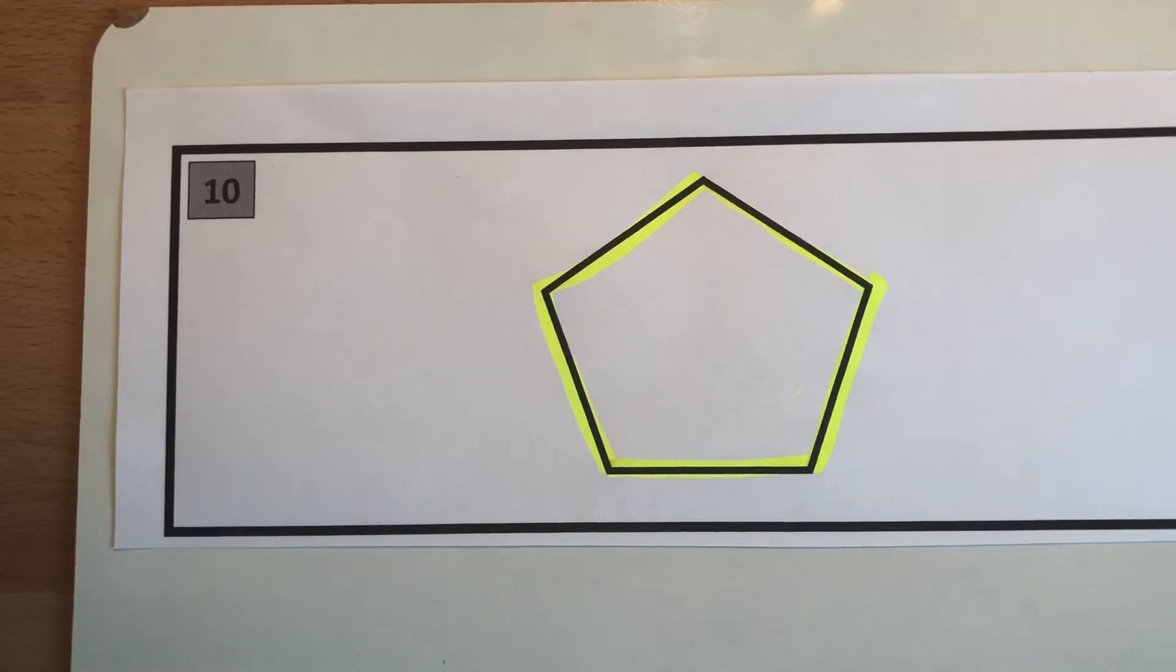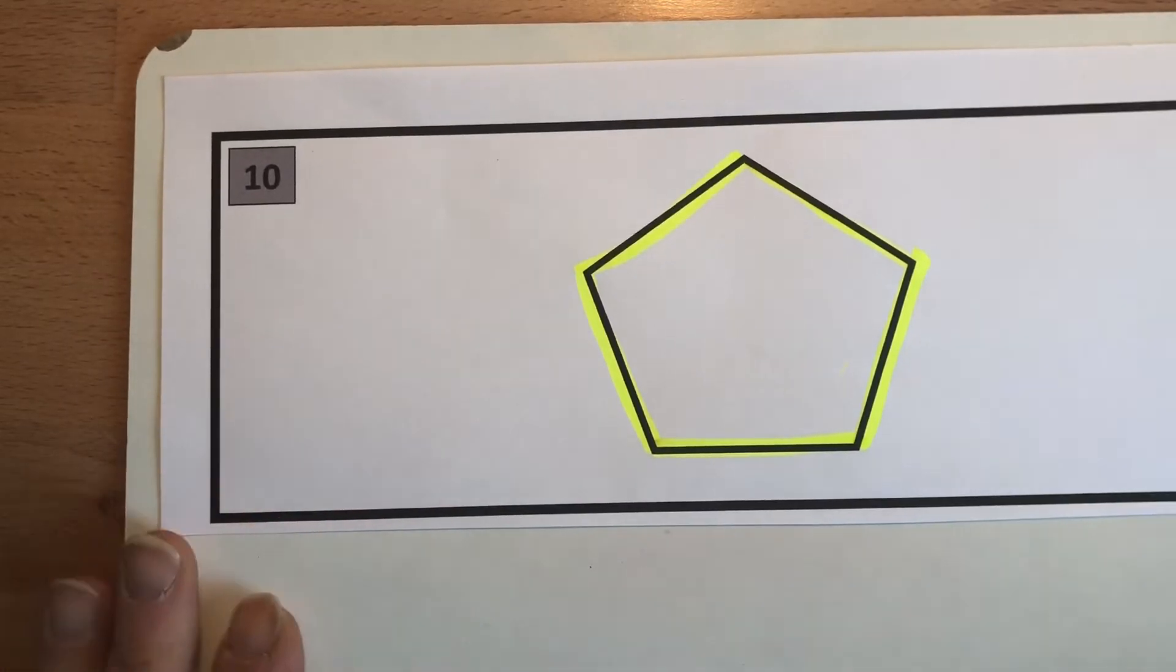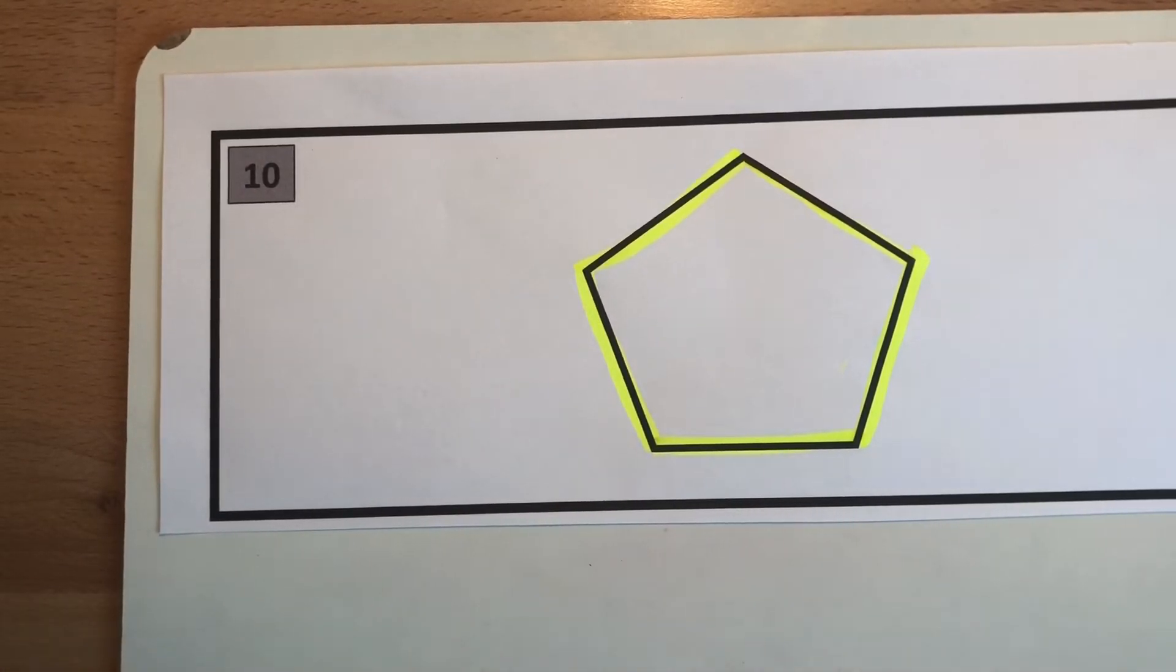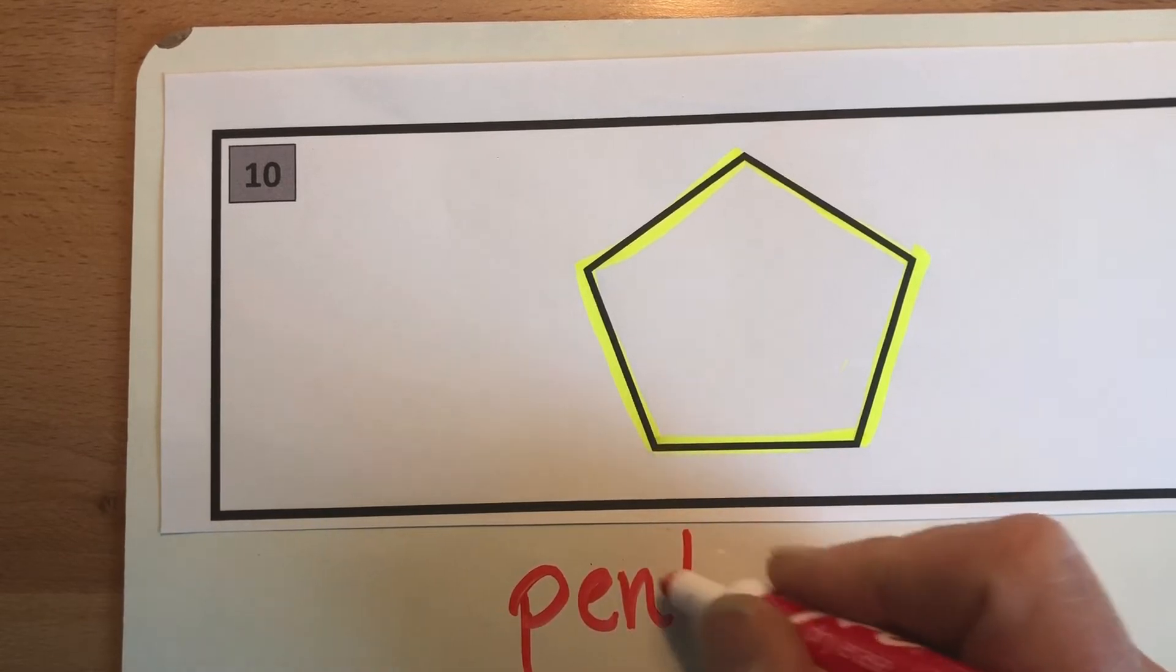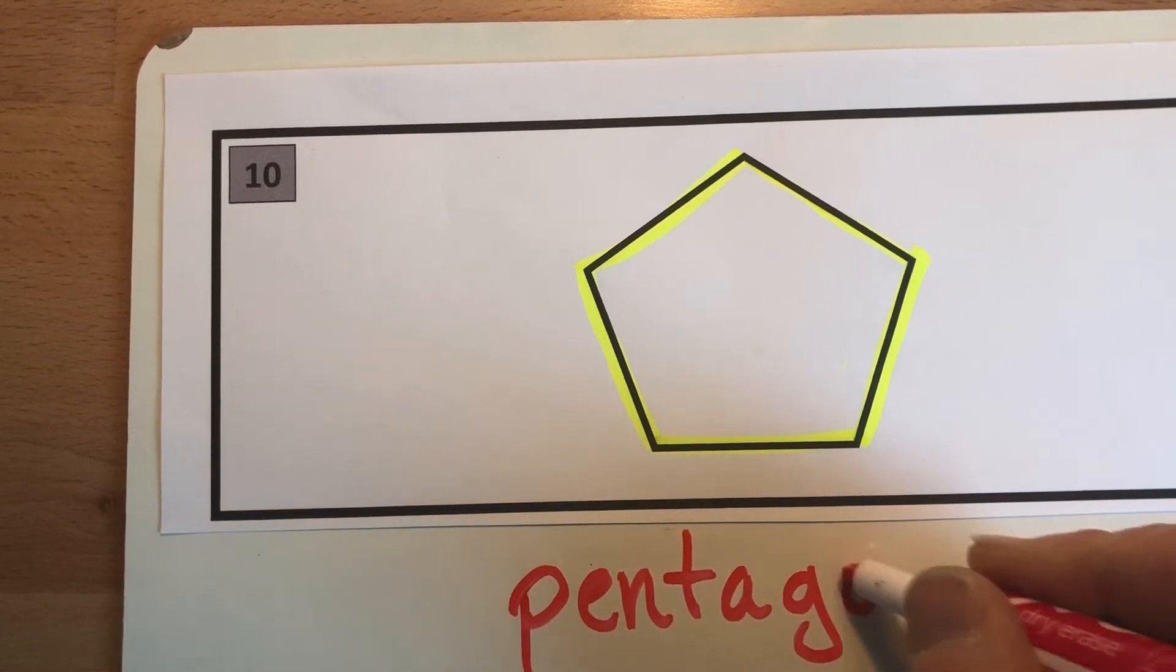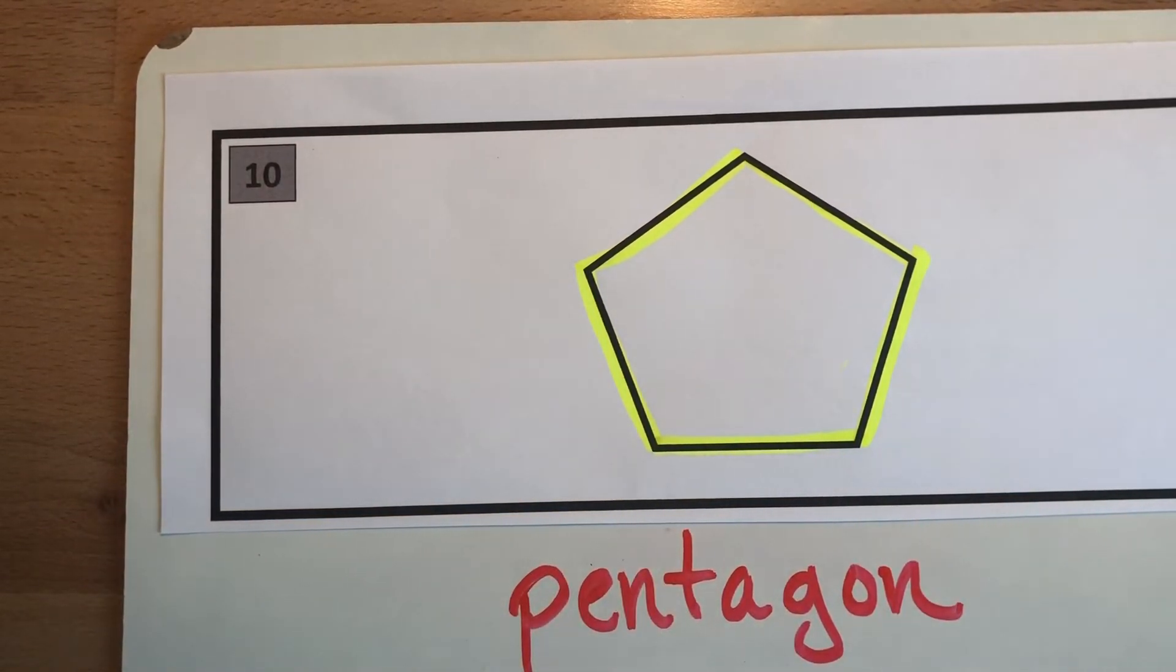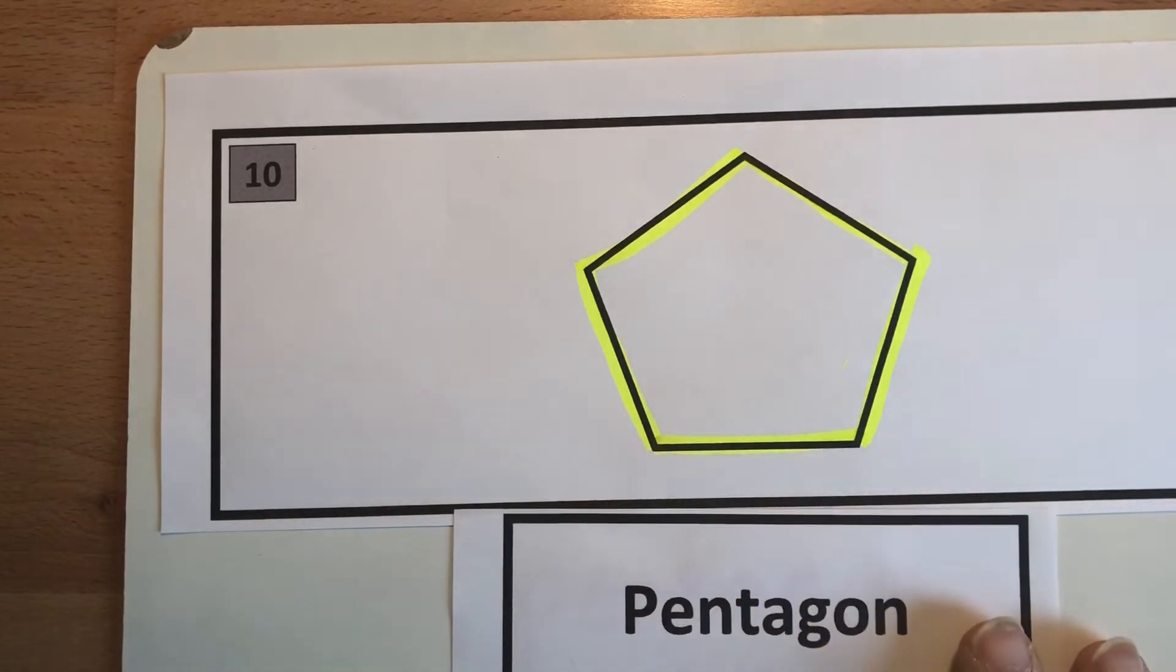All right now you're back, hopefully you had a good discussion about what this shape is. First of all, this is a pentagon. It's got five sides. So you probably said that as one of your attributes, got five sides. Not only does it have five sides, oh there's my little card, pentagon.